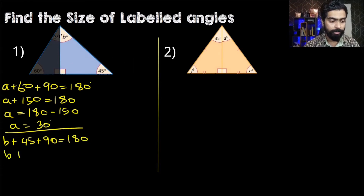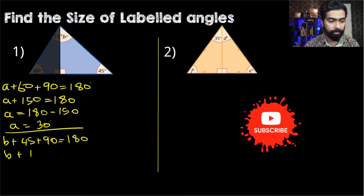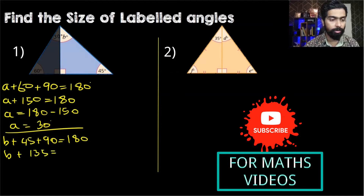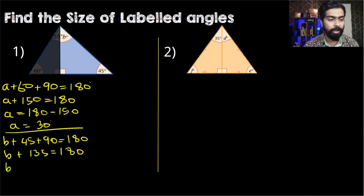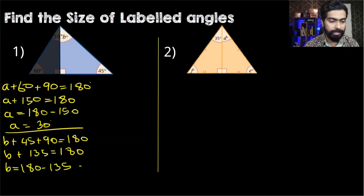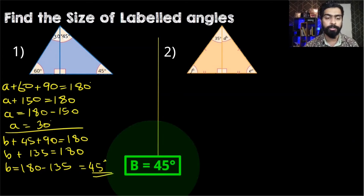B plus 135 is equal to 180. Subtracting both sides by 135, we have B is equal to 180 minus 135, therefore the value of B is equal to 45 degrees.